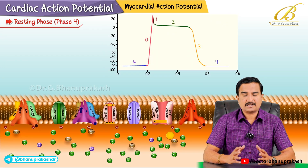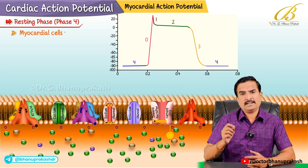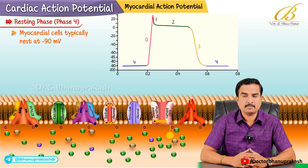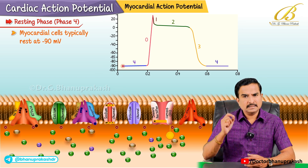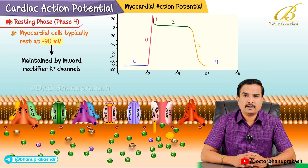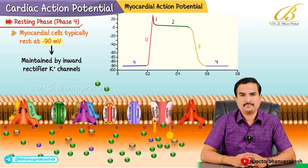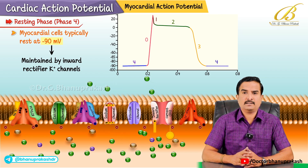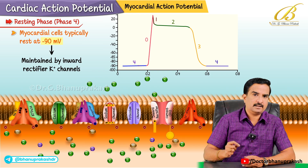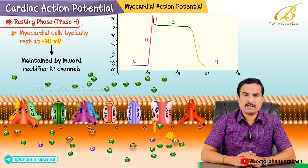Let us start with the resting phase, which is called phase 4. Myocardial cells typically rest at about minus 90 millivolts, which is the resting membrane potential of the myocardial cells. This negative membrane potential is mainly maintained by inward rectifier potassium channels that allow potassium to move out of the cell. Meanwhile, sodium and calcium channels remain closed in this phase. This is the baseline from which the action potential begins.